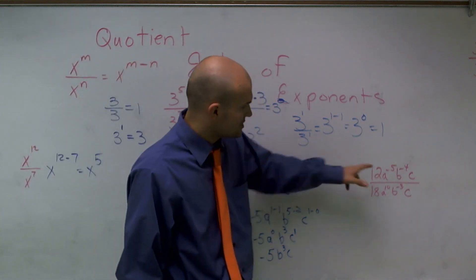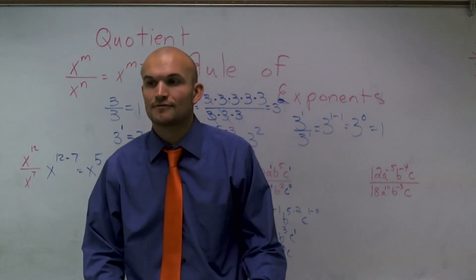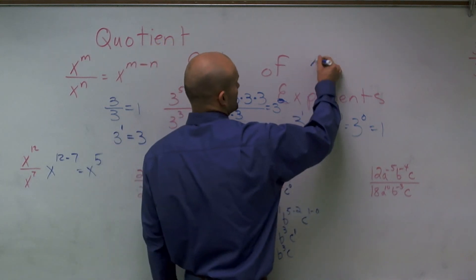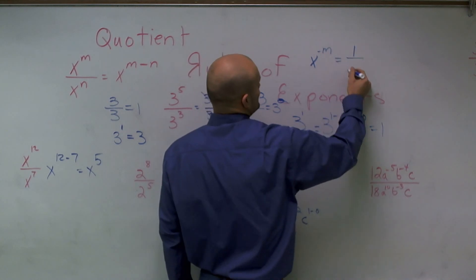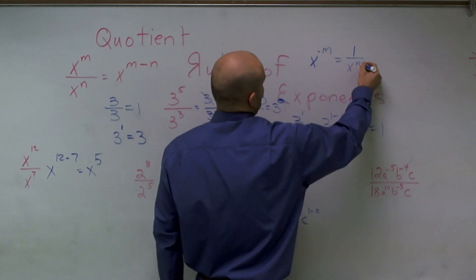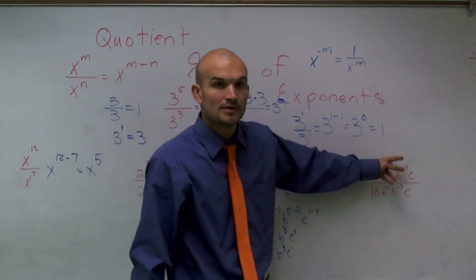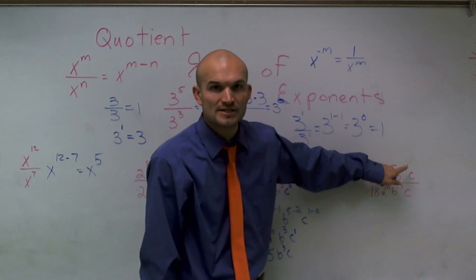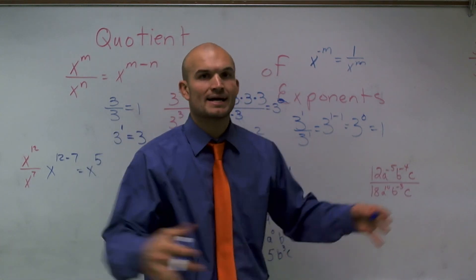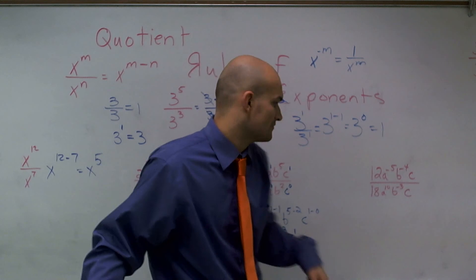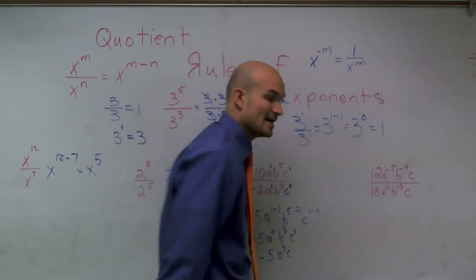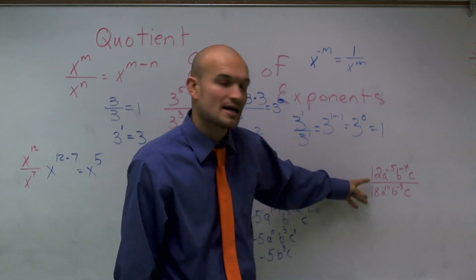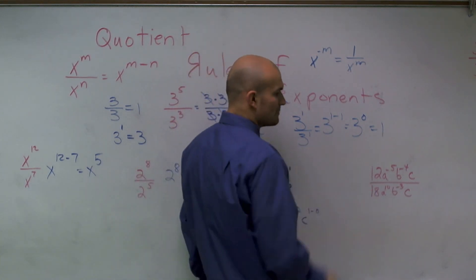In this next problem, you notice that we have some negative exponents. Remember the rule: if you have x to a negative m, that can be rewritten as 1 over x to the m. I'm going to work the problem out by subtracting with my negative numbers. So I'll have 12 over 18 — and 12 does not go into 18 evenly, however this is a fraction I can reduce. I can divide the top and bottom both by 6, so that reduces down to 2 thirds.